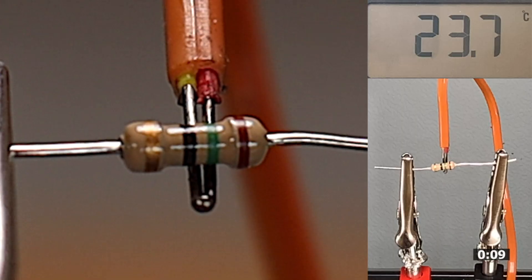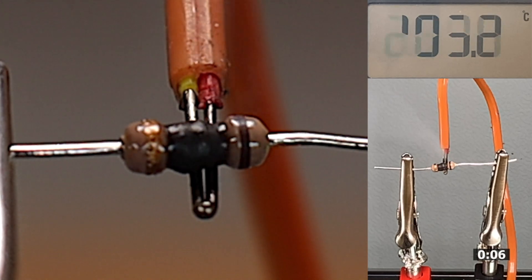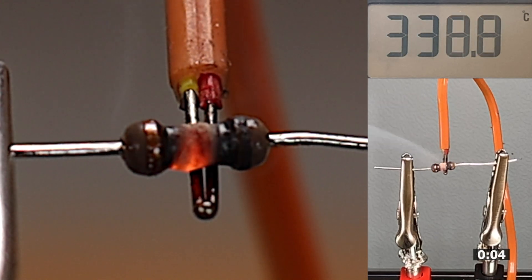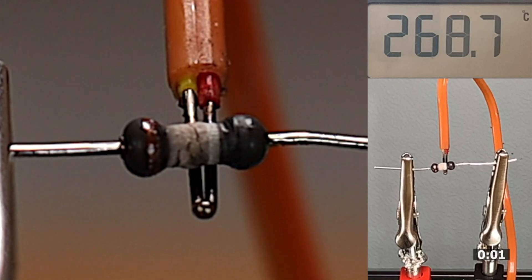If we now increase the voltage level once more to 10 volts one last time, the resistor reaches its limit and burns out at a temperature of just below 400 degrees centigrade.